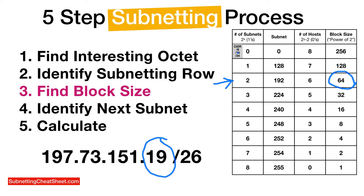I also wanted to point out that this chart — the four columns, this one cheat sheet — contains all the block sizes for CIDR slash 8 through slash 32. So you'll only need this one cheat sheet to find the block sizes for all of the CIDRs.